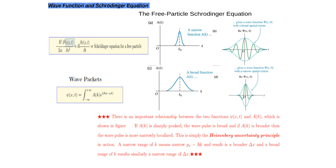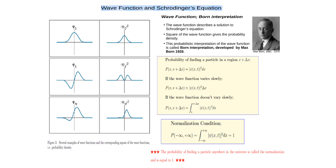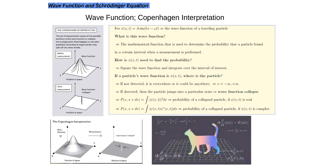We talked about how we can define the amplitude and wave function: if the amplitude is narrow, the wave function is wider, and if the amplitude is wider, the wave function becomes narrower. As you see in Born's picture, the particle is somewhere along this wavy behavior. In the Copenhagen interpretation, the particle is everywhere — a smeared picture.